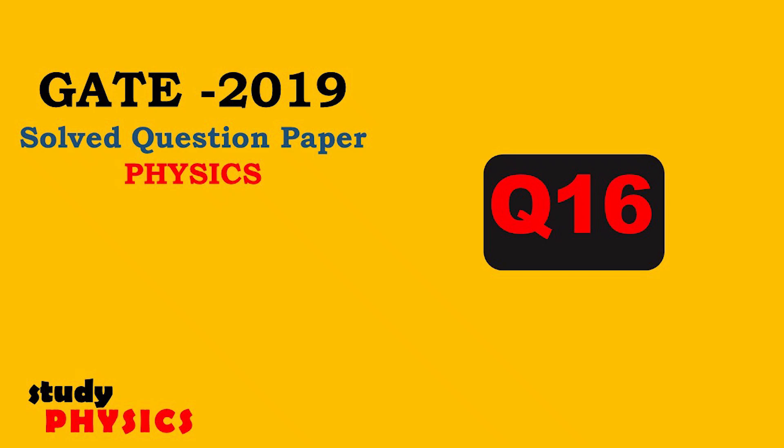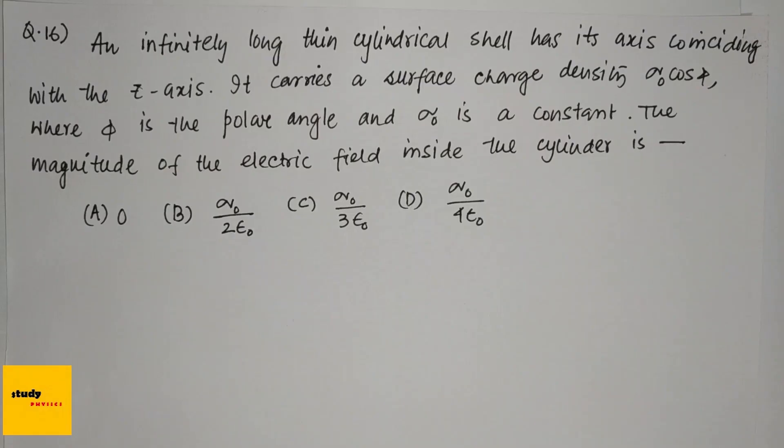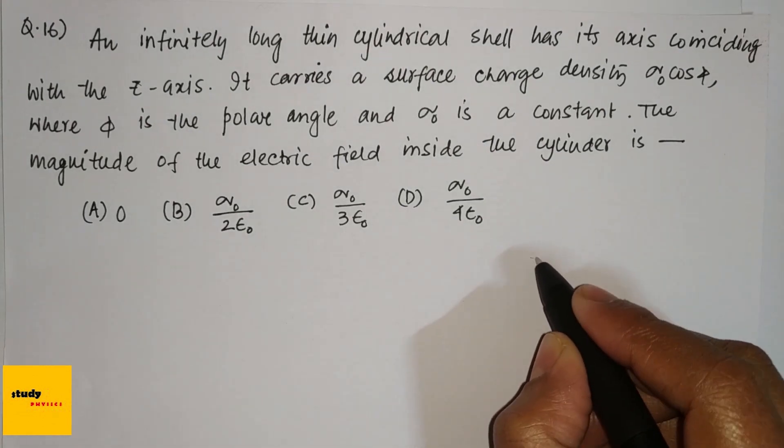Hi everyone, welcome to Study Physics. Here's question 16: An infinitely long thin cylindrical shell has its axis coinciding with the z-axis. It carries a surface charge density sigma = sigma_0 cos(phi), where phi is the polar angle and sigma_0 is a constant. The magnitude of the electric field inside the cylinder is...